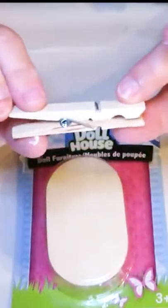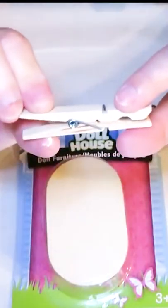I picked up a little dollhouse table from the Dollar Tree and some clothespins. Start off by removing any of the center springs and you are going to need some popsicle sticks.